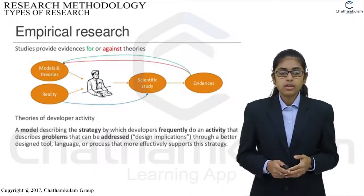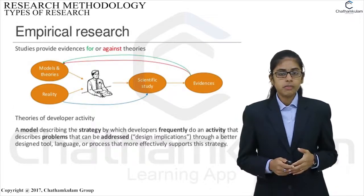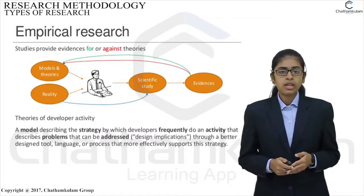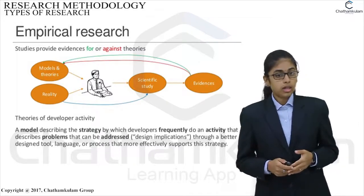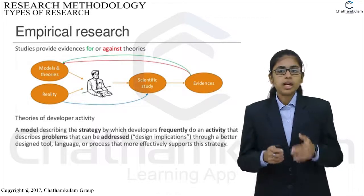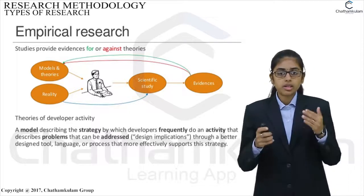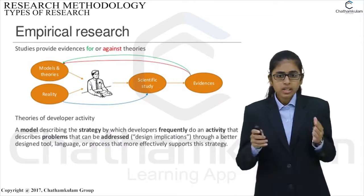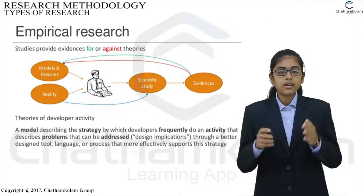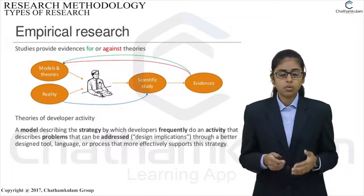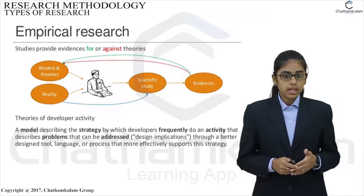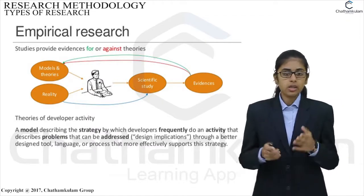In this type of research, the researcher first formulates a working hypothesis and then gathers sufficient facts to prove or disprove the stated hypothesis. He or she formulates the experimental design which would manipulate the variables so as to obtain desired information. This type of research is thus characterized by the researcher's control over the variables under study. In simple terms, empirical research is most appropriate when an attempt is made to prove that certain variables influence other variables in some way. Therefore, the results obtained by using experimental or empirical studies are considered to be the most powerful evidence for a given hypothesis.